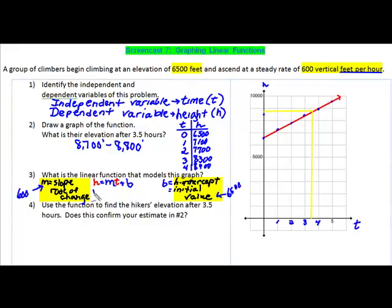We put that information together, and the height at any given time is going to be equal to the rate of change, which is 600, times the amount of time that they have been climbing for, plus the height that they started off at, which was 6,500. We now have a function that we can use to answer the question from number two, which also appears in number four. And that is, what is the hiker's elevation after 3.5 hours? And does this confirm our estimate in number two? We're going to take our function, h equals 600t plus 6,500, and plug in the particular value that we're interested in for time. We end up with 8,600 feet.